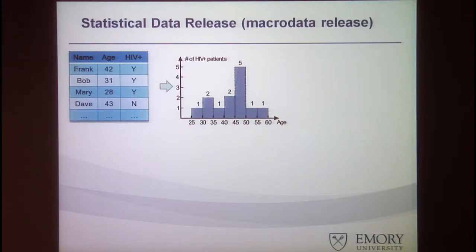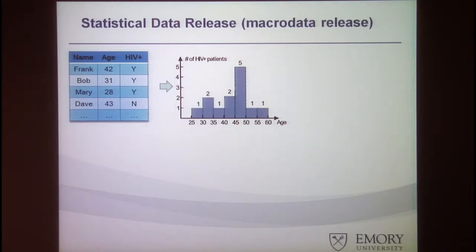If we don't do the anonymization or sanitization carefully, there are real disclosure risks. Another alternative approach is statistical data release or macro data release. In this case, given the original health records, we're only going to release aggregate statistics from the data. However, if we don't do this carefully, there are also disclosure risks. The left-hand side shows a set of medical records with names, age, and whether they're HIV-positive. The right-hand side shows a histogram based on the age attribute — the number of patients that have HIV-positive for each age group. We might think that releasing just this histogram presents no disclosure risk because no individual data are involved — it's only aggregates.